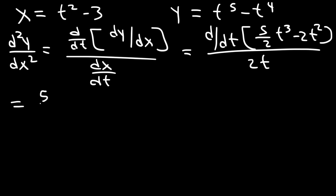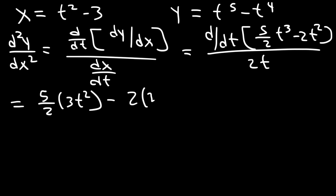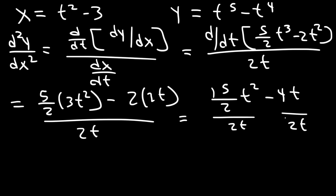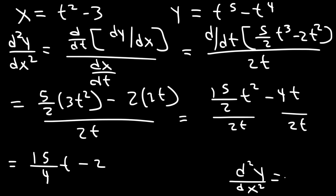The derivative of t cubed is 3t squared, and the derivative of t squared is just 2t. So what we have is 15/2 t squared minus 4t, and let's divide each by 2t. So 15/2 divided by 2 is 15/4, and t squared divided by t is just t. Negative 4t divided by 2t is negative 2. So d²y/dx² equals 15/4 times t minus 2.